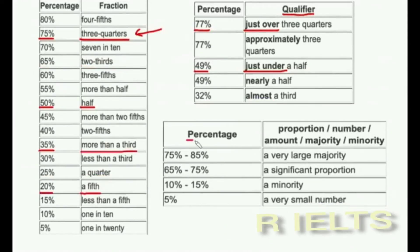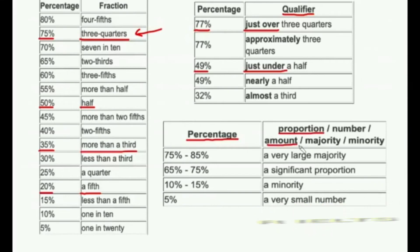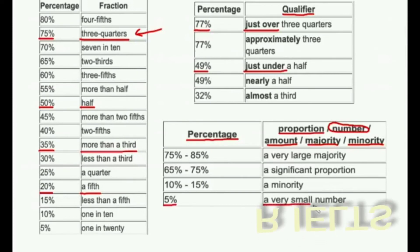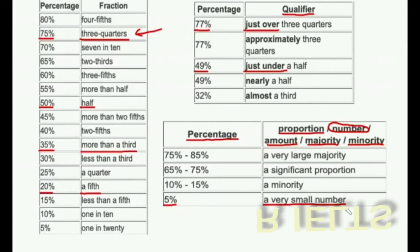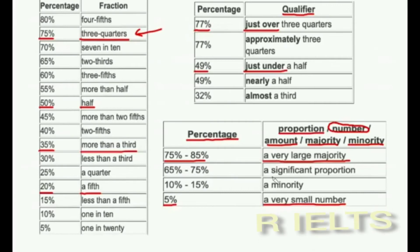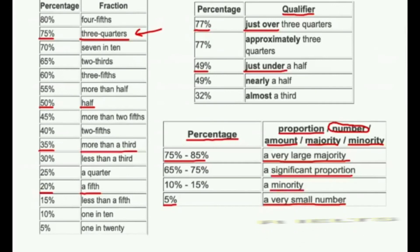IELTS pie charts are given in percentages, but to vary your language there are different things you can use: proportion, amount, majority, minority. You have to be careful with 'minority' — because you don't know the numbers involved. For example, if you've got 5%, that's a very small percentage, but if you're talking about millions of people, 5% could still be a large number. So you might be better off avoiding that one if you don't know the numbers. For 75% to 85% you could say 'a very large majority.' A lower figure could be called 'a minority' or 'a significant proportion.' Looking at this kind of language and its variations will help you get a high score, because the examiner will be looking for a good range of vocabulary and language.